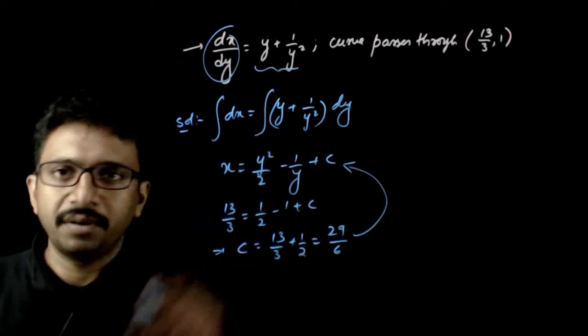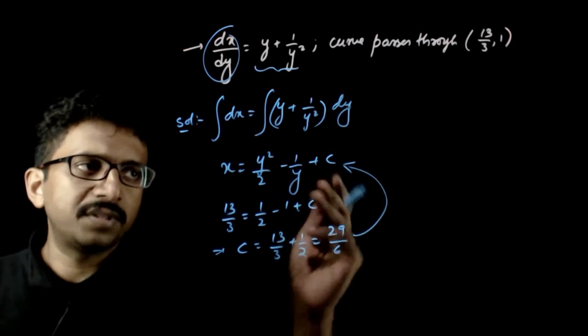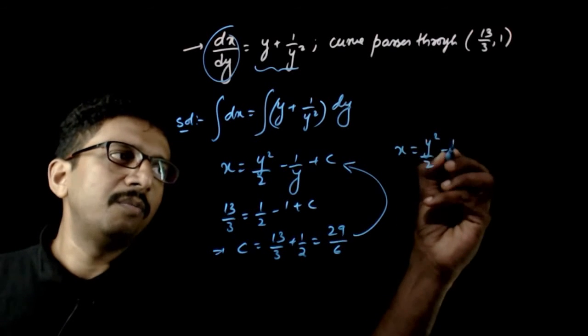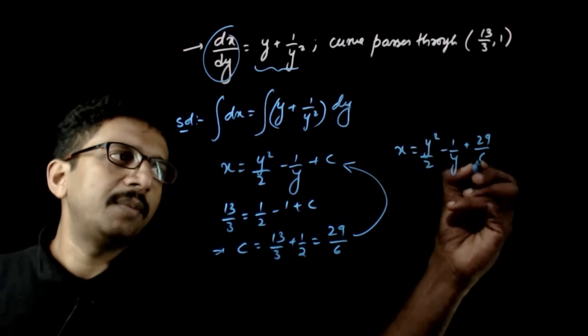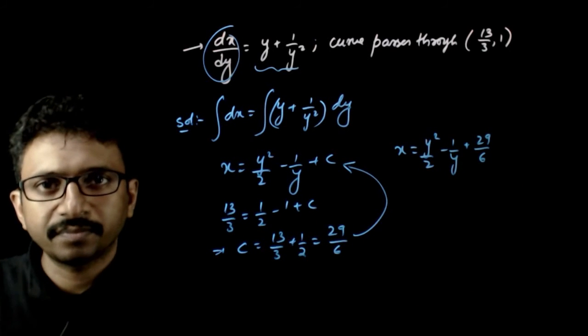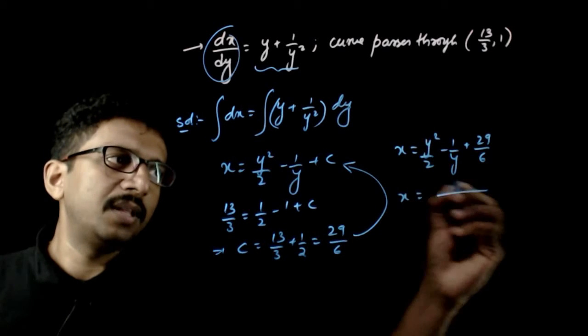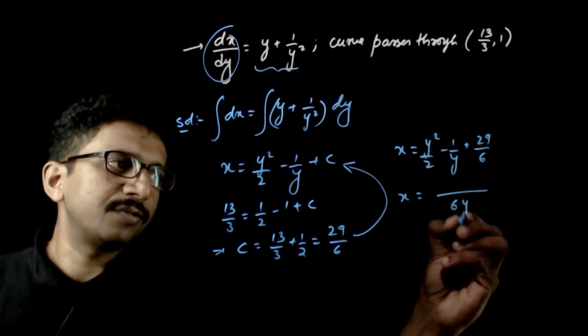C is equal to 29 by 6, I just need to substitute it here. So if you substitute it, you have x is equal to y square by 2 minus 1 by y plus 29 by 6. So if you simplify this, x is equal to the LCM is 6y.